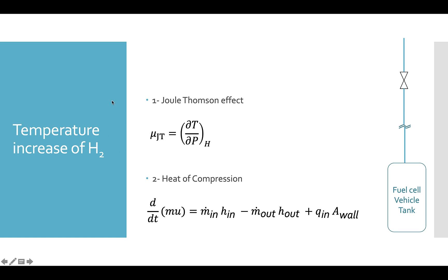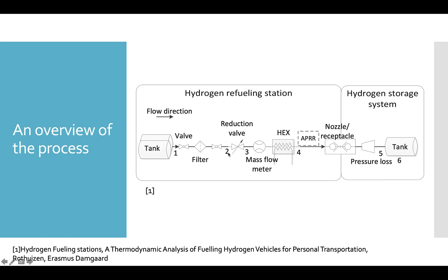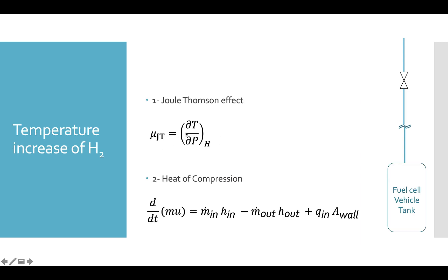The Joule-Thomson effect says that when a fluid goes through an isenthalpic process — a process where the enthalpy remains the same, much like the reduction valve process — the temperature is going to change with respect to pressure. If this coefficient is positive in our working condition, then the temperature changes in the same manner as the pressure: if the pressure drops, the temperature drops; if the pressure increases, the temperature also increases.